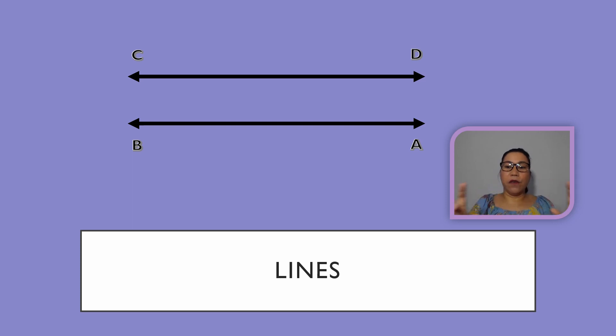These two lines are parallel. What do you mean by the word parallel? If you extend those two lines, they will never meet because they are equidistant to each other.